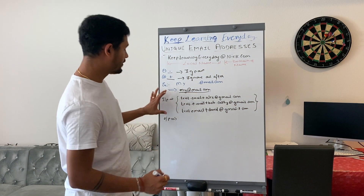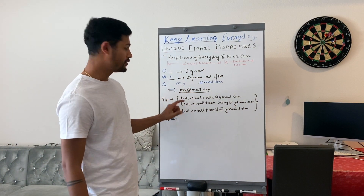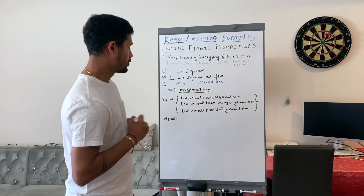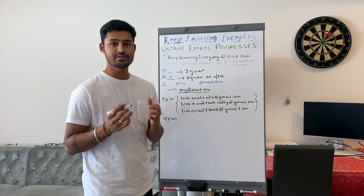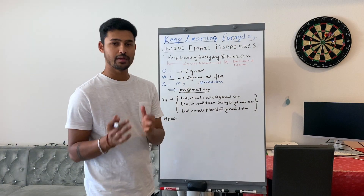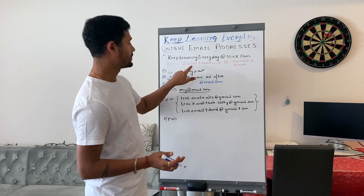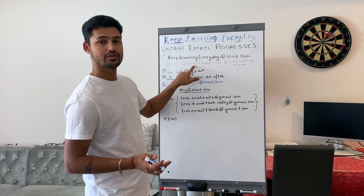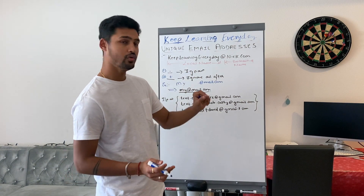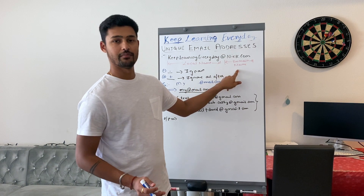The input given for this problem is a list of email addresses in which every email will contain some invalid characters. You need to output the number of unique email addresses by removing all the invalid characters from the local name. The key thing to observe is that you are not supposed to remove the dot or the plus from the domain name.